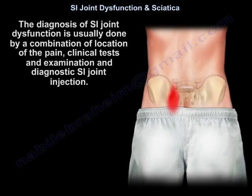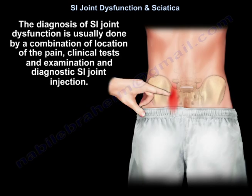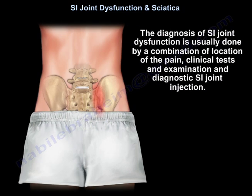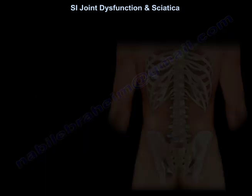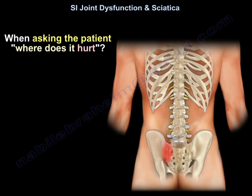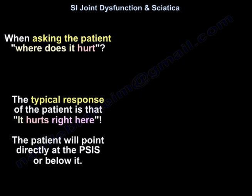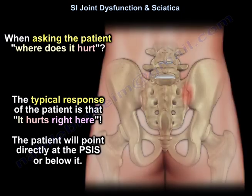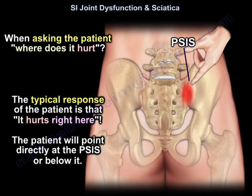The diagnosis is usually made by a combination of location of the pain, clinical tests and examination, and diagnostic SI joint injection. When asking the patient where it hurts, the typical response is pointing directly at the posterior superior iliac spine or below it.